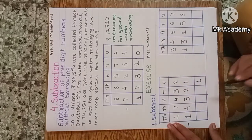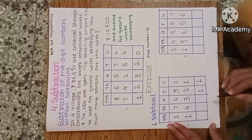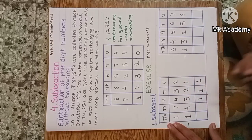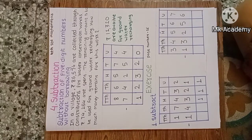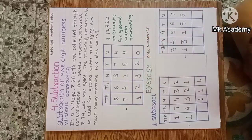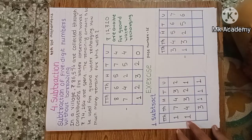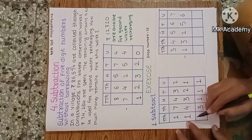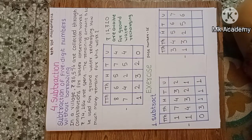Now hundreds: 4 minus 3, one hundred remaining. Now thousands: seven thousand minus four thousand — three thousands remaining. Now ten thousands: one minus one equals zero. The answer is three thousand one hundred and eleven.